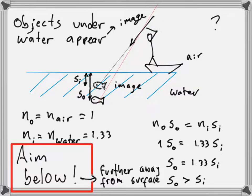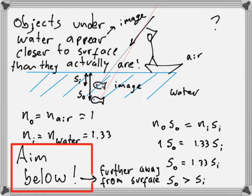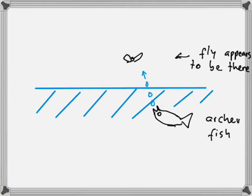Aim further from the surface — that's where the actual fish is. In general, objects underwater appear closer to the surface than they actually are: the image appears closer to the surface than the actual object.